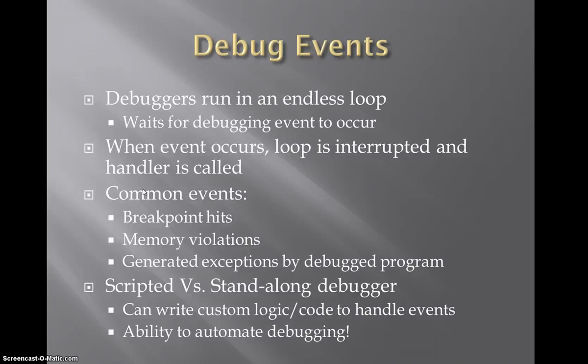The next big thing is debugger events. What a debugger does is run essentially in an endless loop, waiting for debugging events to occur. When that event occurs, the loop is interrupted and a handler is called. Some common events you'll see when debugging are breakpoint hits, memory violations, and exceptions that are generated by the debugged program itself.